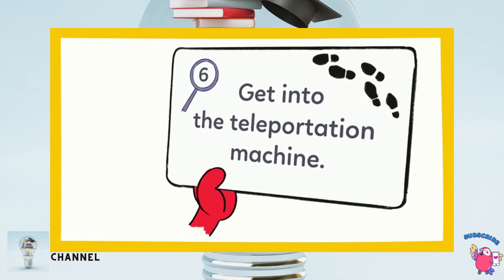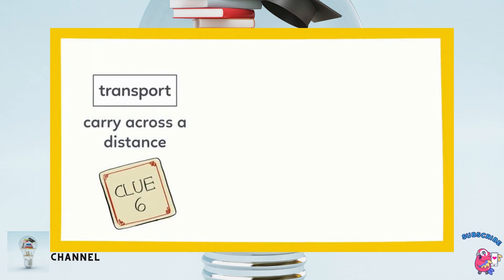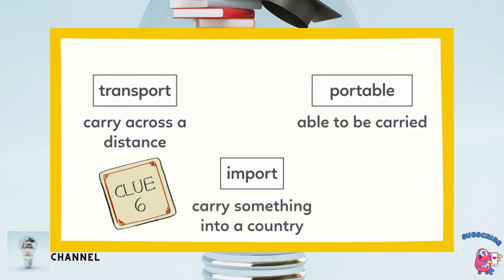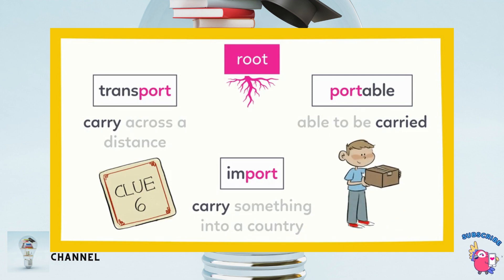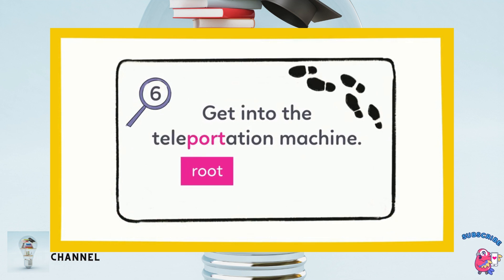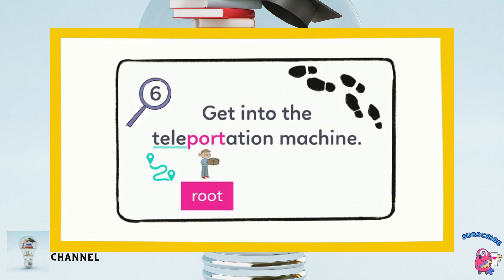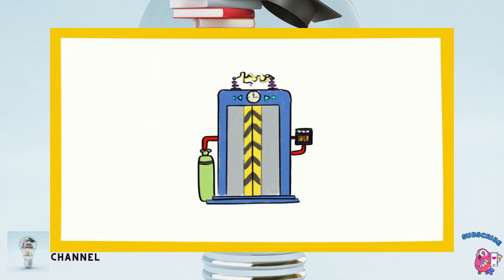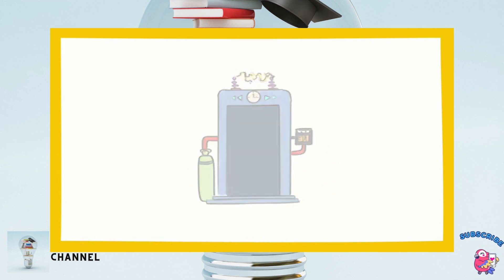Get into the teleportation machine. The hints: transport — carry across a distance; portable — able to be carried; import — carry something into a country. The root port means carry. I know that tele means far away, like how we call people far away on the telephone. Since port means carry, we should look for a machine that can carry us far away. It's this time machine — let's get in!